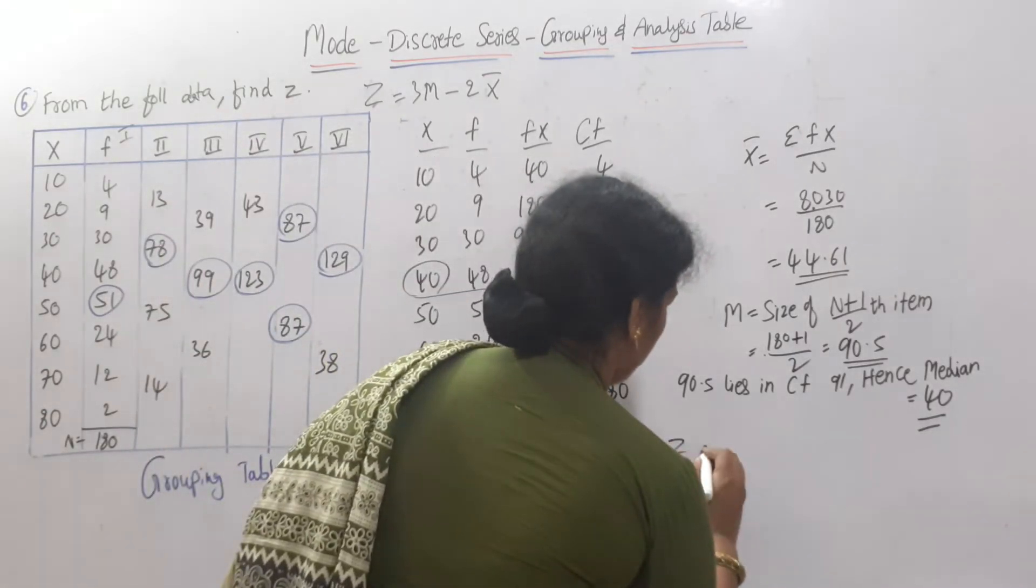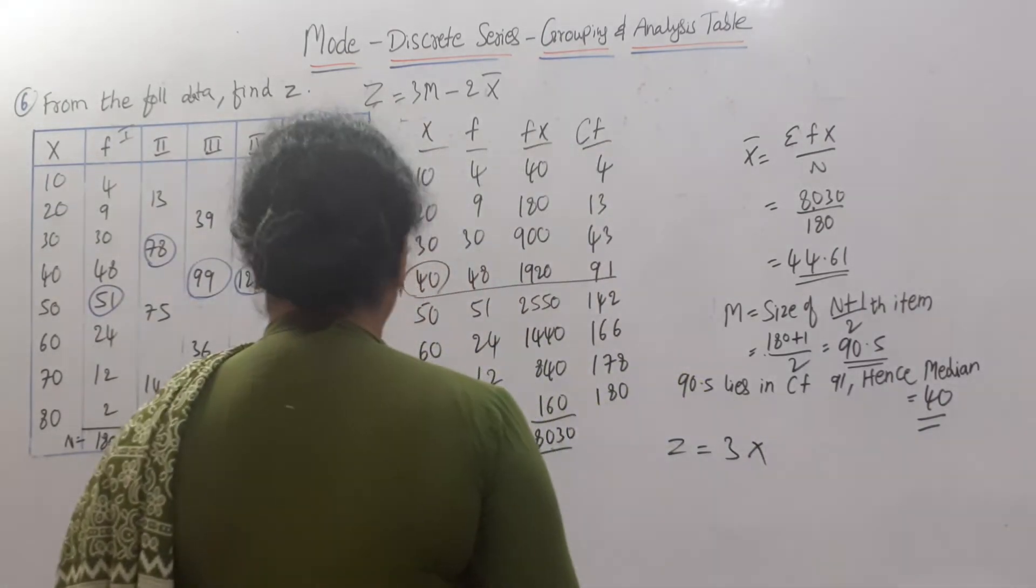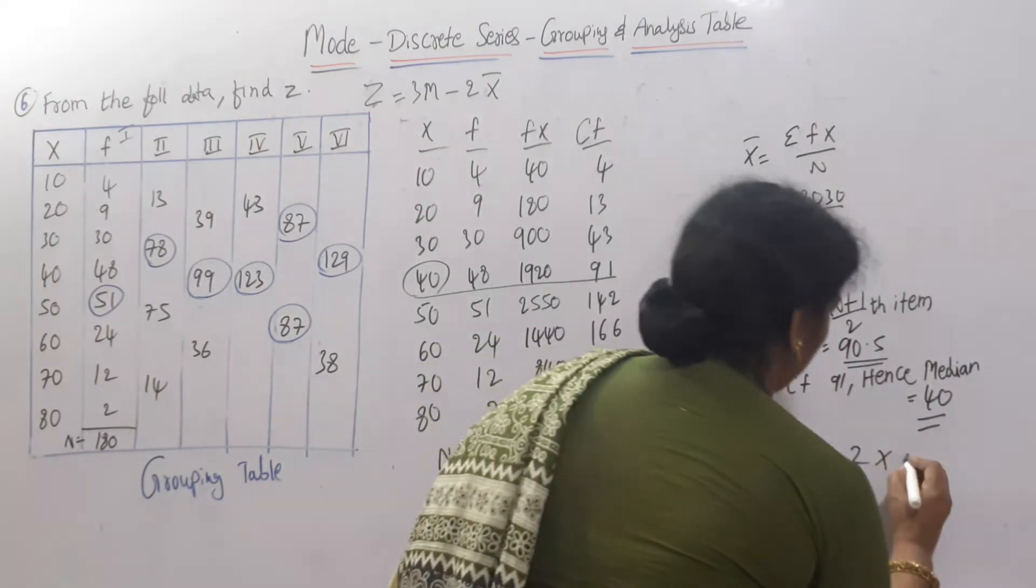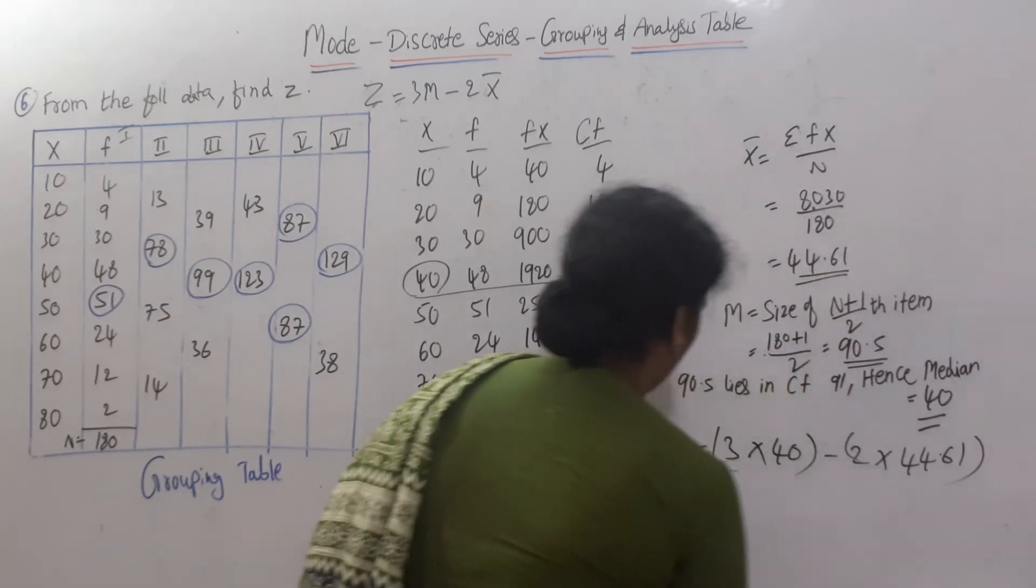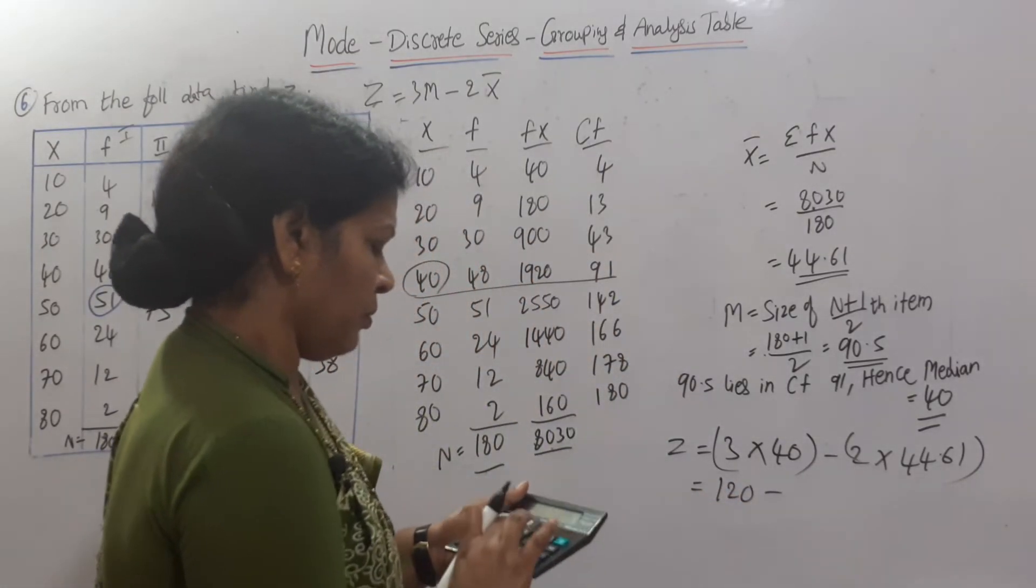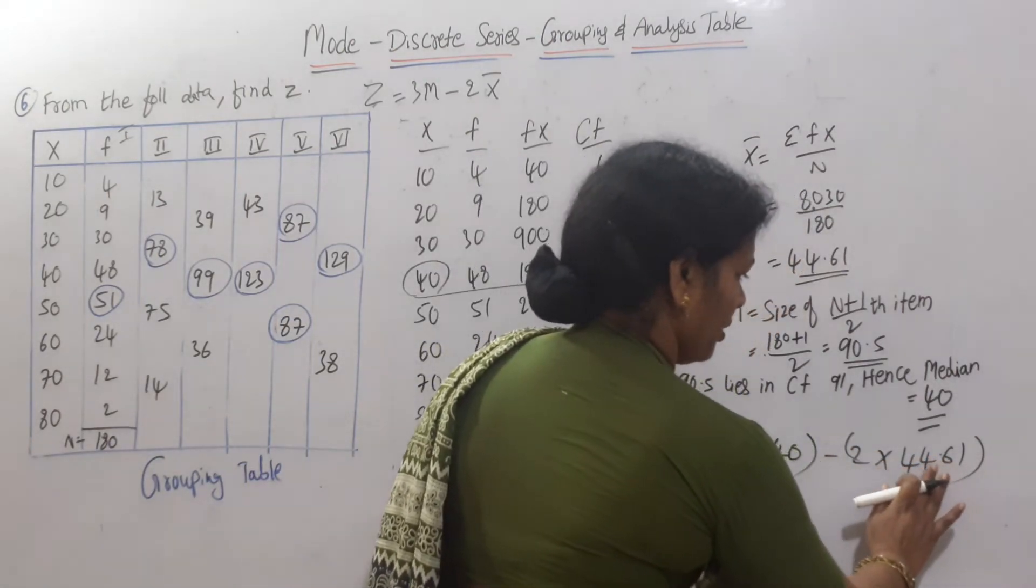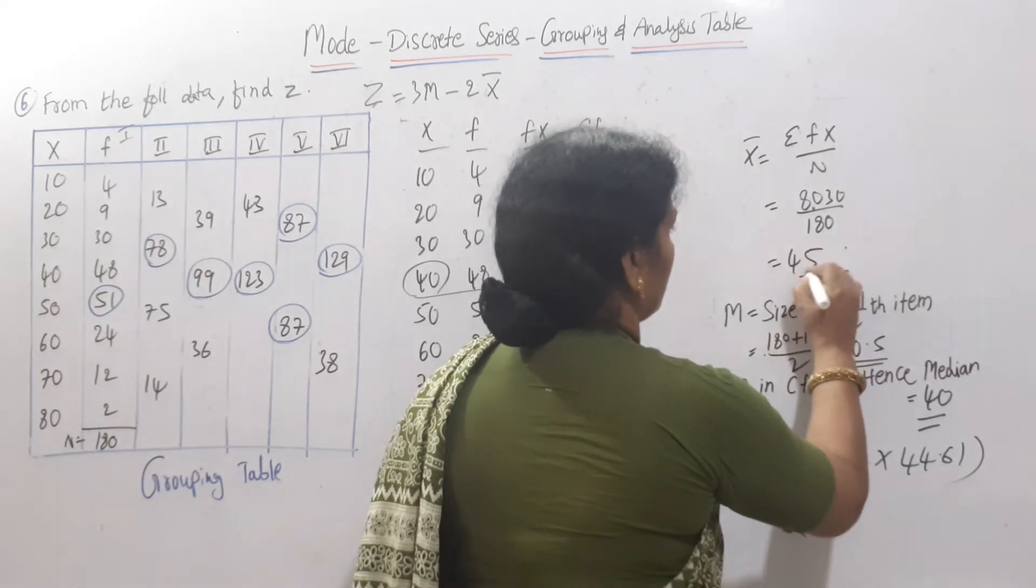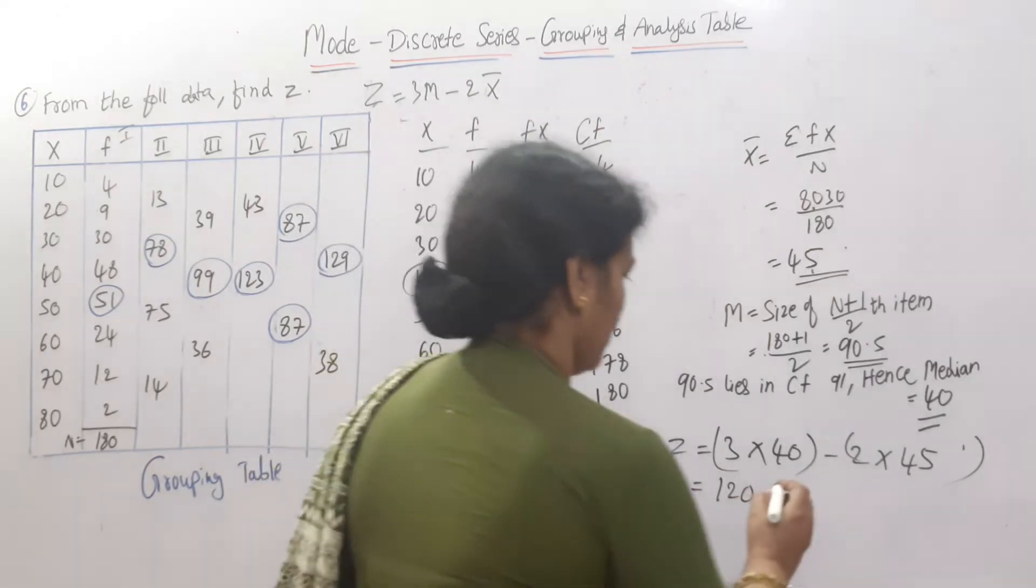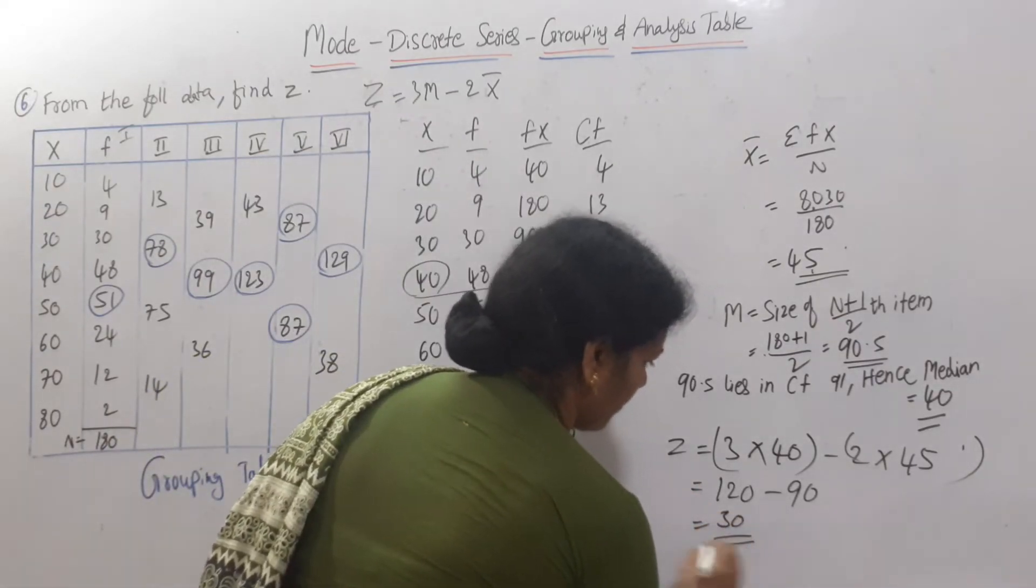So median is 40, we will apply in the formula. z is equal to, mode is equal to, 3 into median. 3 into median is 40, minus 2 into x bar. x bar is 44.61. Let us do the calculations. 3 into 40 means 120 minus 44.61 into 2, or we can take it as 45 also, nearest rupee. So 45 into 2 comes to 90. So z will be here 30. That is all.